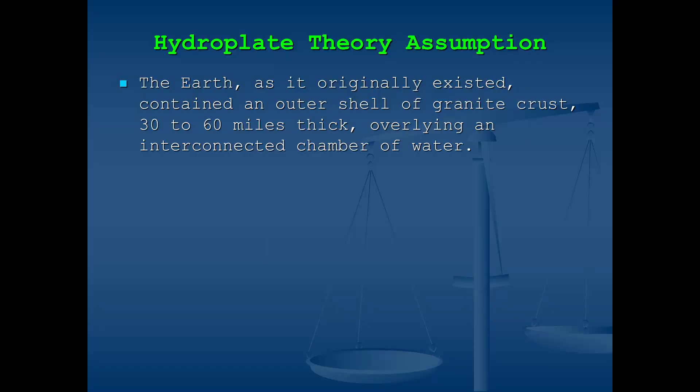Basically, the evidence is laid out on the scales of justice and the scales need to tip to the guilty side beyond a reasonable doubt to convict. This is basically the process used to study the questions of origins. What is the starting assumption for the hydroplate theory? The Earth, as it originally existed, contained an outer shell of granite crust 30 to 60 miles thick overlying an interconnected chamber of water. Given that starting assumption, the laws of physics dictate that the unique features of the Earth as we know it would result.